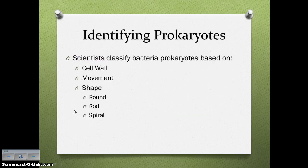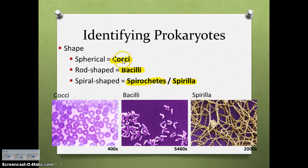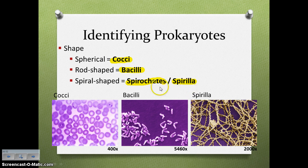Scientists classify bacteria based on cell wall and shape. There are three types of shapes: round bacteria (cocci), rod-shaped bacteria (bacilli), and spiral-shaped bacteria (spirilla, sometimes called spirochetes). Those are the three shapes of bacteria.